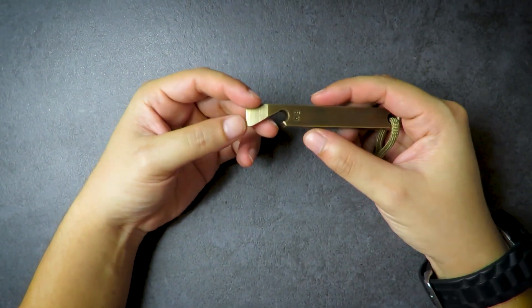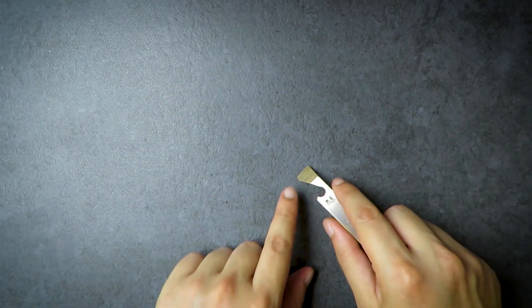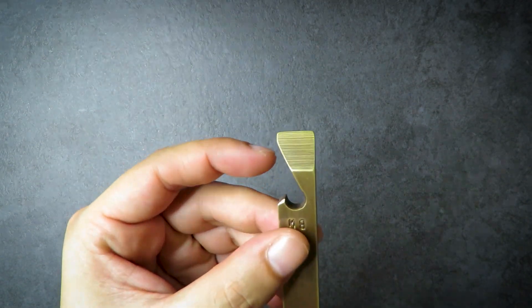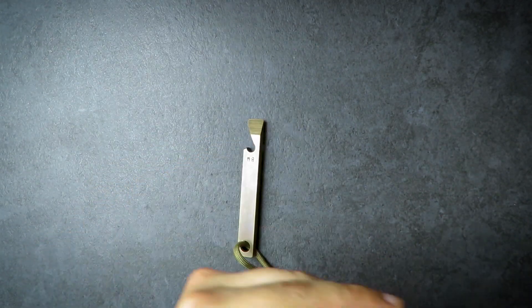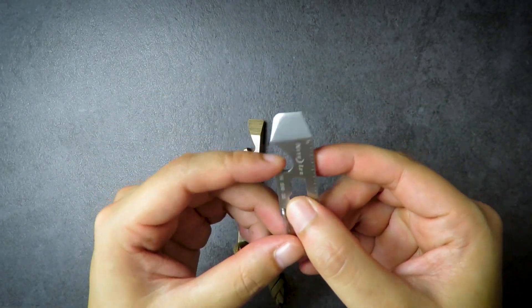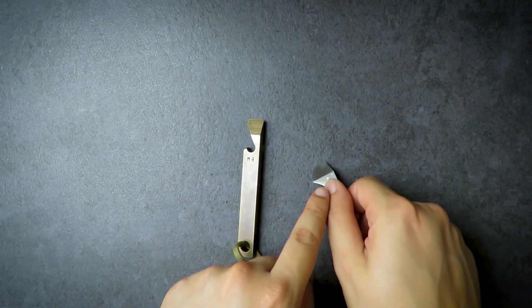So first things first, what is a pry bar? A pry bar is something that you can use to pry something open, of course that is in the name. You can also use it for some light scraping. A lot of pry bars do come with this little bottle cap opener right here. Here is another pry bar, this is the Nite Ize pry bar, the pocket tool pry bar.